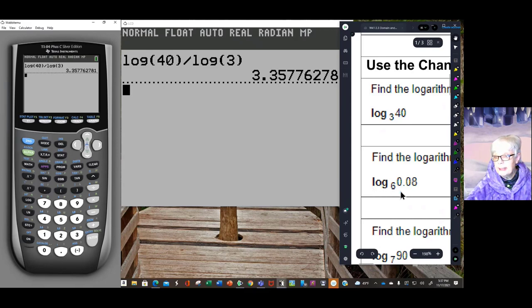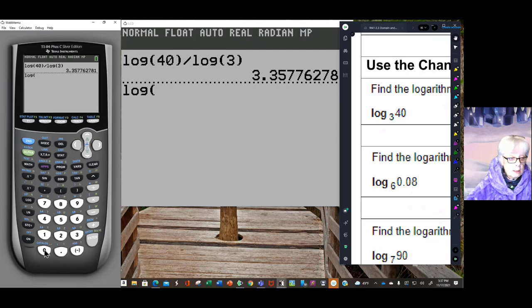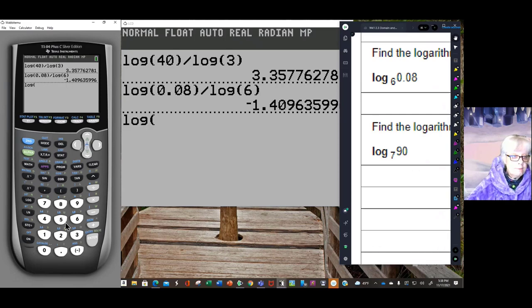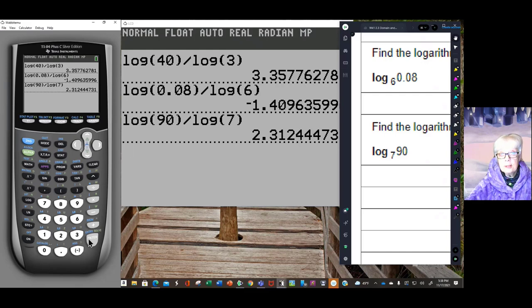Now let's use it here for log base 6 of 0.08. That will be log 0.08, close parentheses, divide, log base 6, so log 6. That's all there is to it. Enter. Now log base 7 of 90. Log of 90 divided by log 7. And there's your answer.